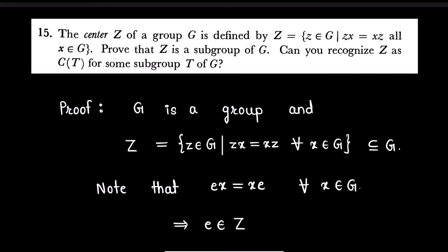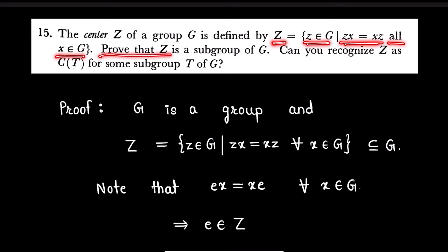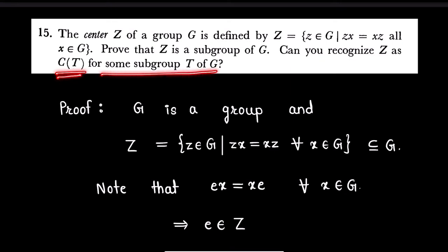Hello friends, in this video I am going to solve an exercise question from the book Topics in Algebra. The question is: the center Z of a group G is defined as the set of all elements z in G such that zx equals xz for all x in G. We have to prove that Z is a subgroup of G, and also determine whether we can recognize Z as the centralizer of some subgroup T of group G.